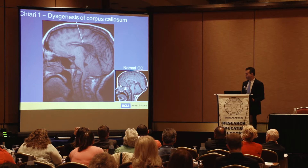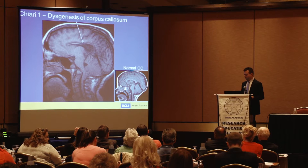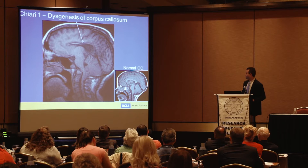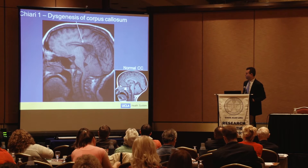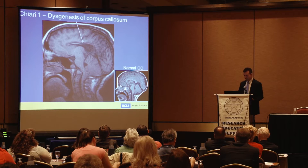Remember the corpus callosum — the large tract that connects the two cerebral hemispheres. It's not the only tract, but it's the largest. Here we can see agenesis of the corpus callosum, which is fairly common with Chiari malformations. You see this on the mid-sagittal section — and here's a normal comparison alongside the Chiari malformation.